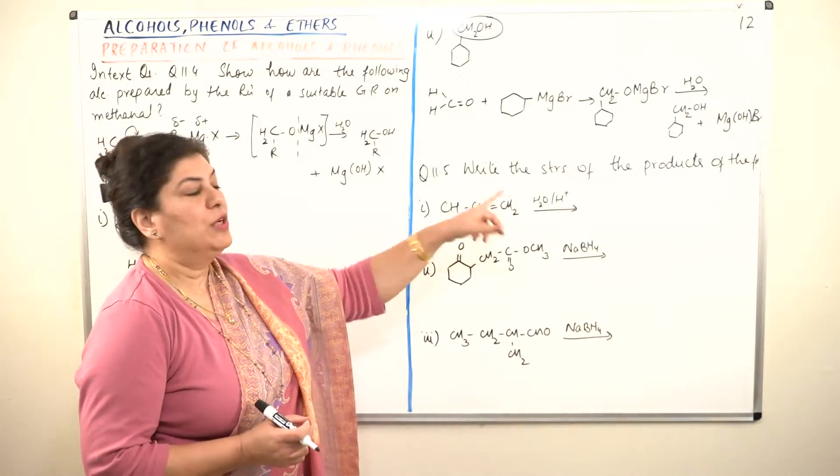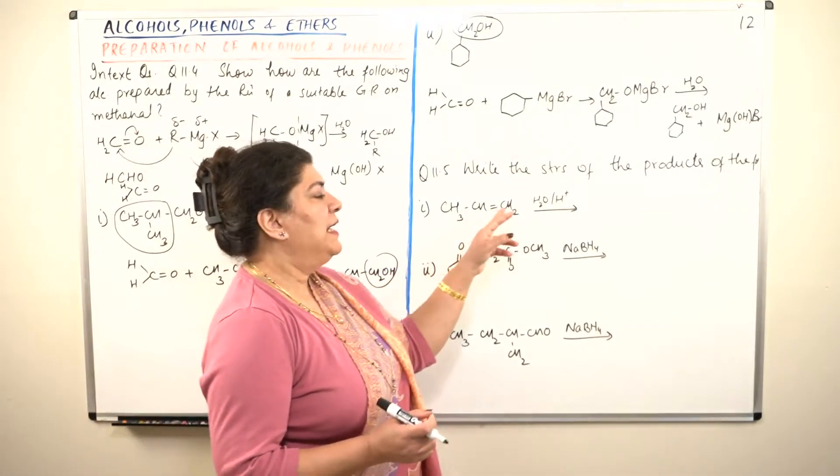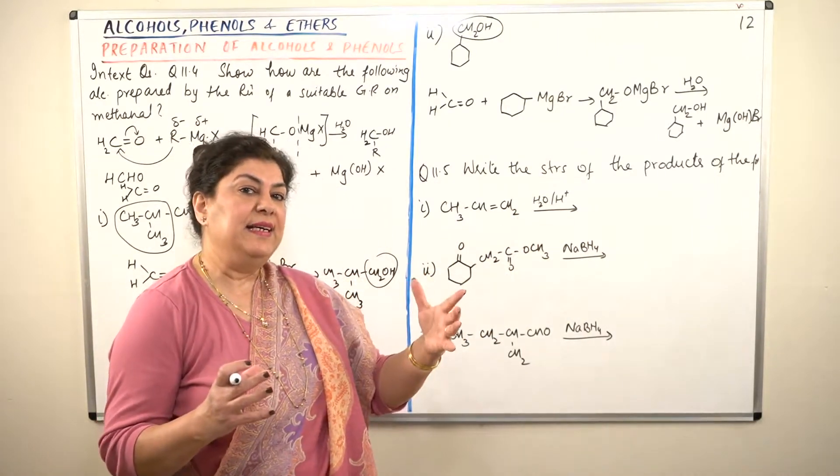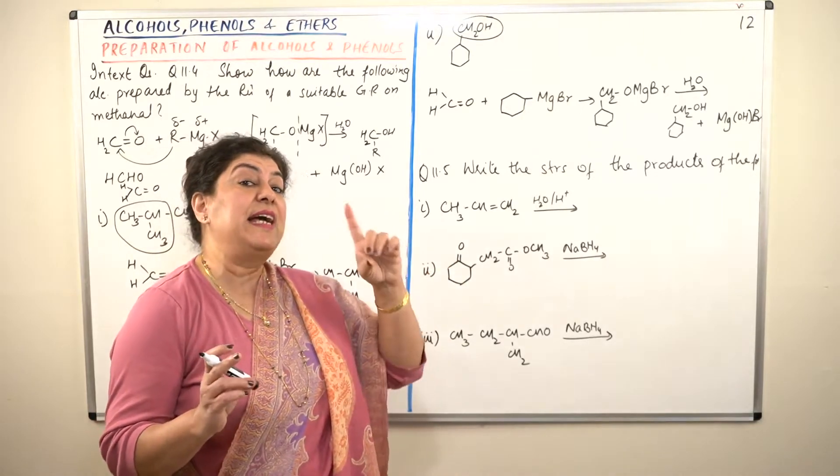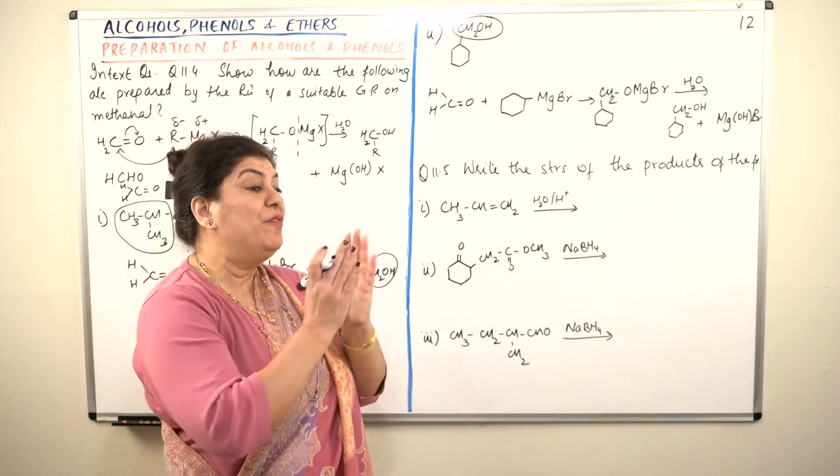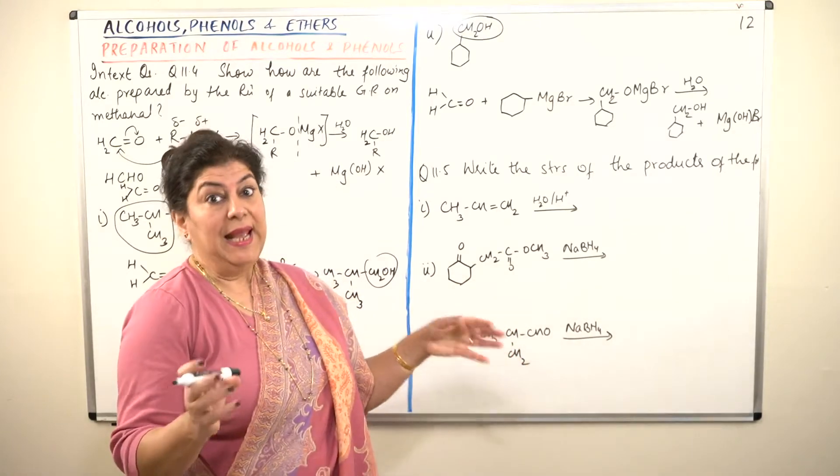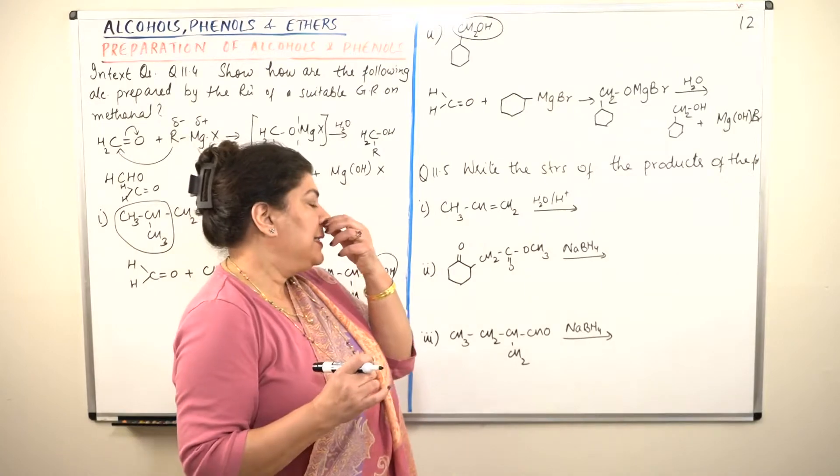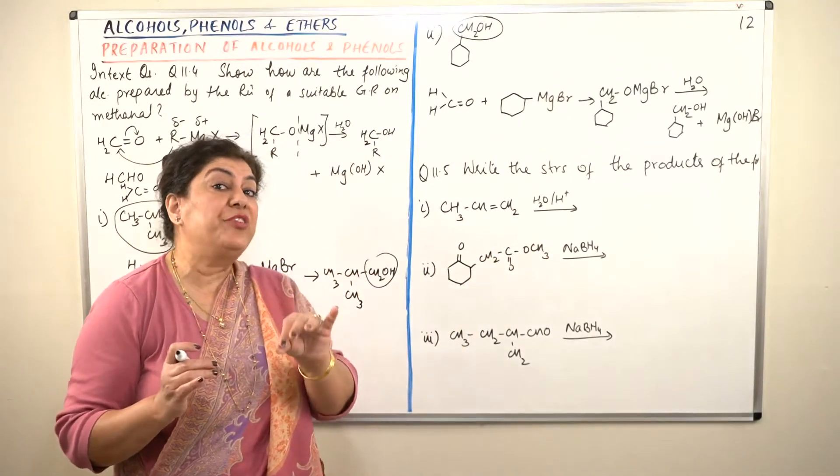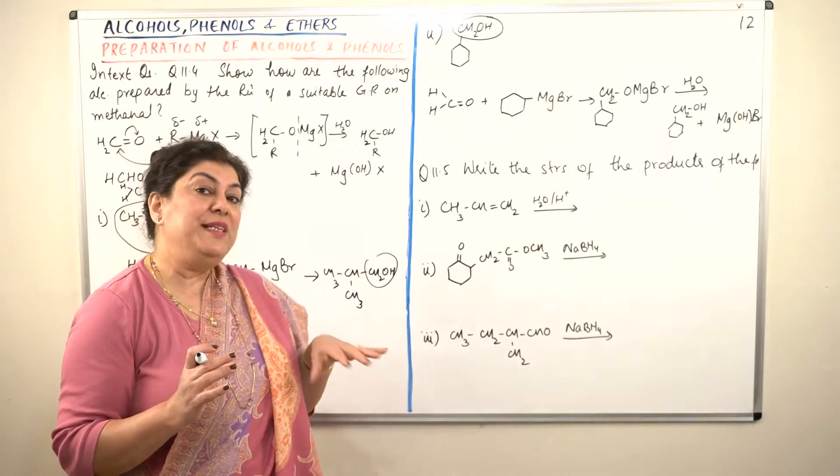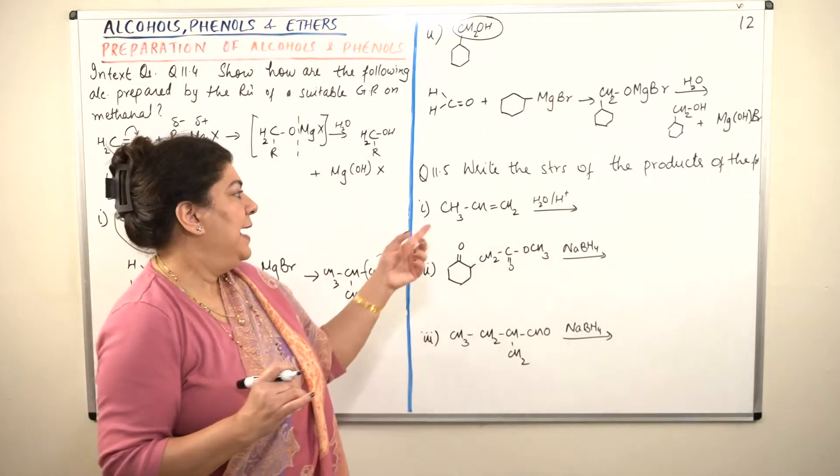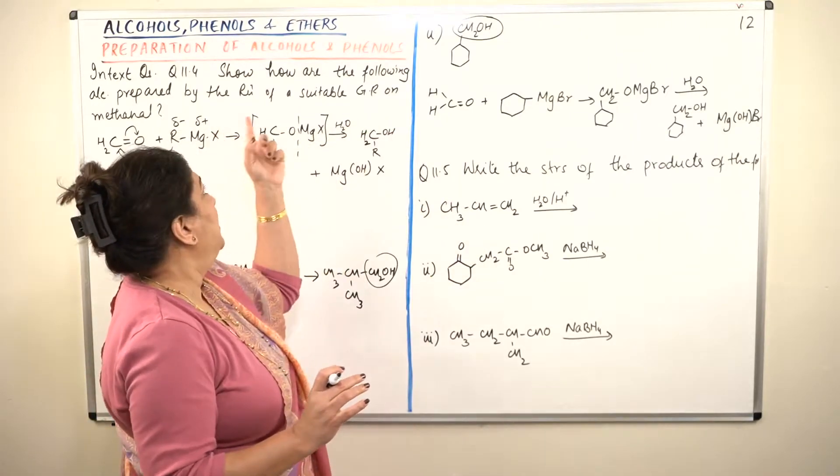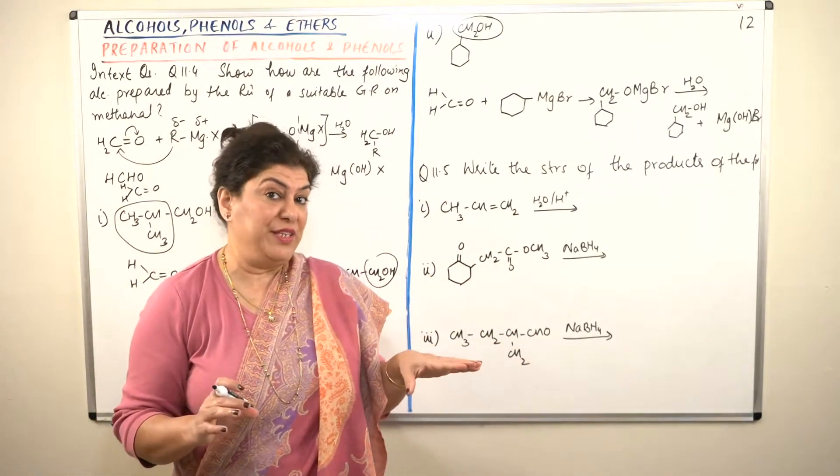CH3-CH double bond CH2. It is an alkene. And we have studied that you get alcohols when you carry out the hydration of alkenes. Acidic or not hydrolysis. It is hydration. Hydrolysis means where water is used to break a compound. And hydration means addition of water. So this is catalytic, acid catalyzed hydration of alkene, which means a water molecule is adding.